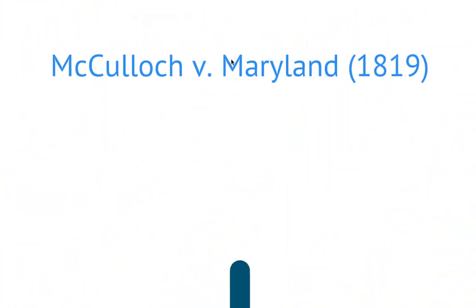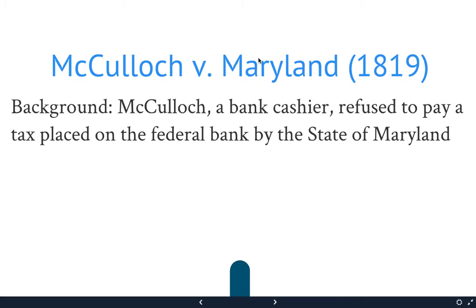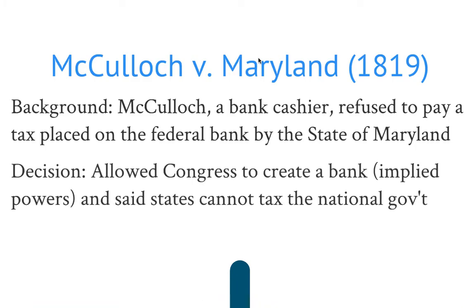McCulloch versus Maryland in 1819. McCulloch was a bank cashier who refused to pay a tax placed on the federal bank by the state of Maryland. The federal bank was brand new, and the state of Maryland tried to tax it. The Supreme Court's decision was that Congress is allowed to create a bank and the states cannot tax the national government because of the supremacy clause.